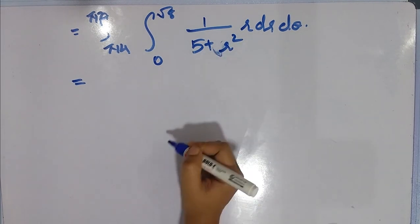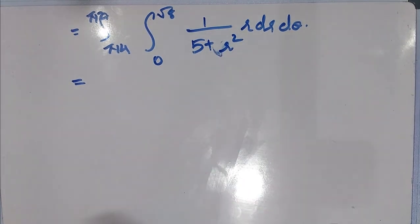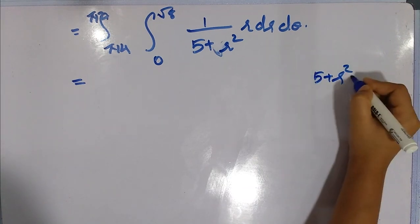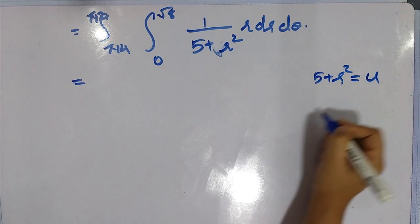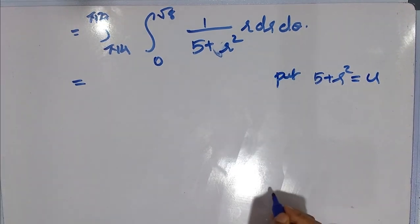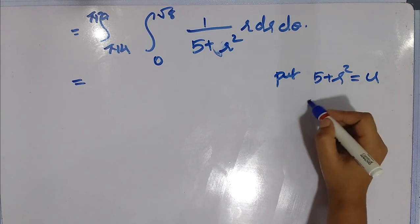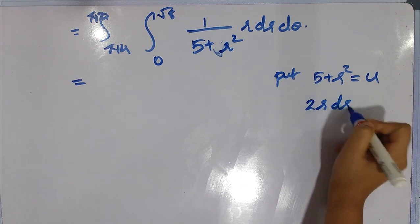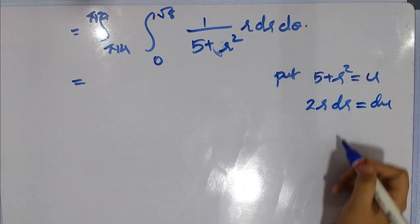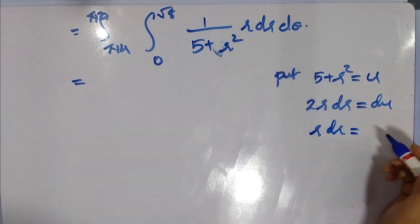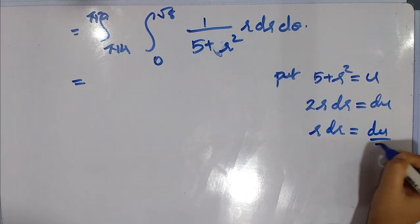Now we apply a simple substitution: let u = 5 + r². Differentiating, 2r dr = du, so r dr = du/2. This substitution simplifies the integral significantly.